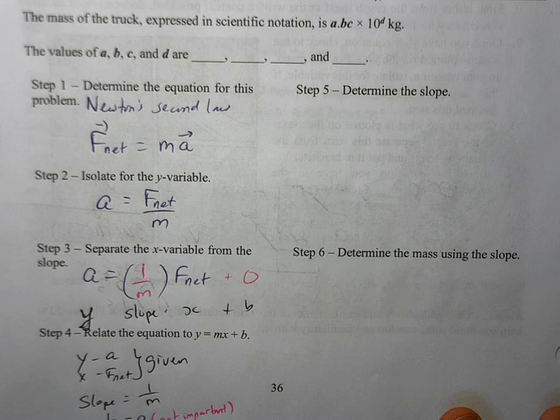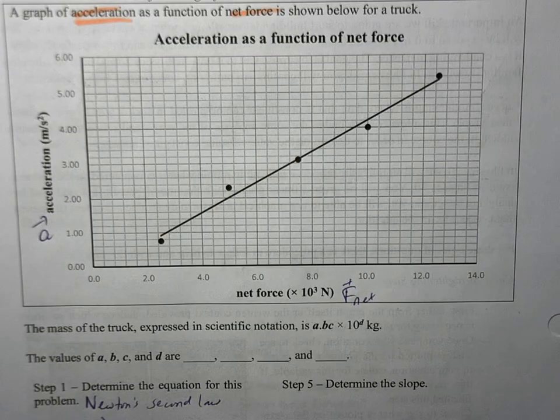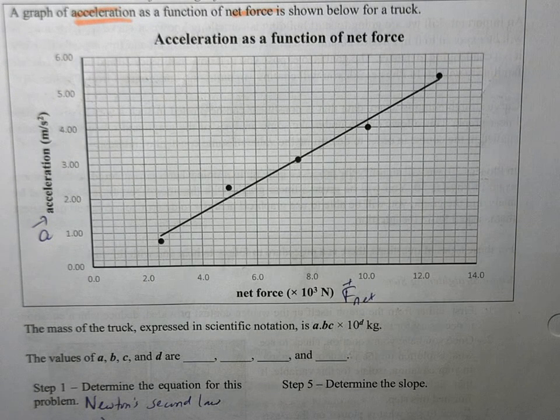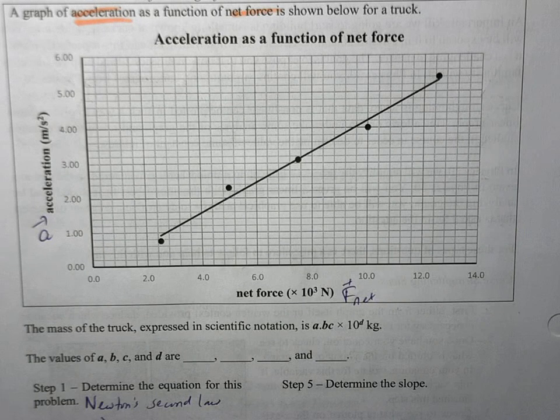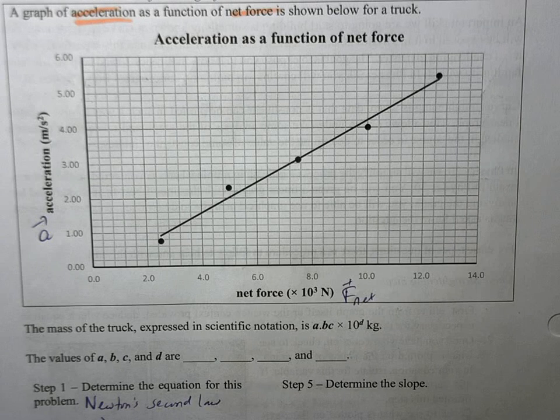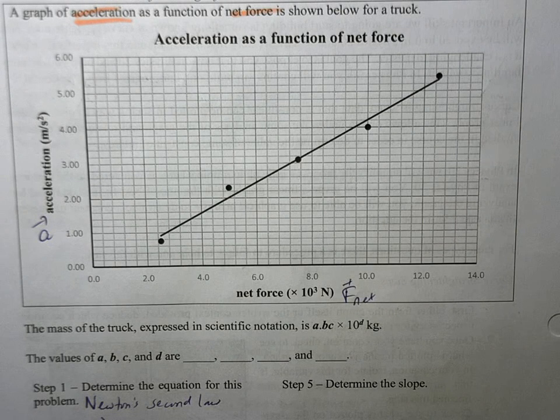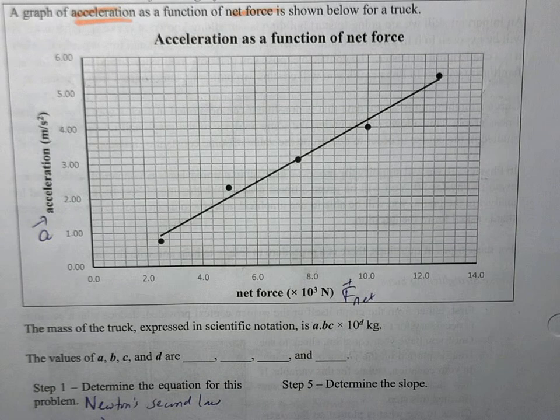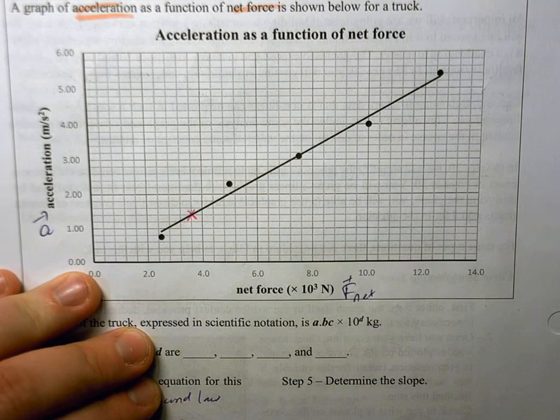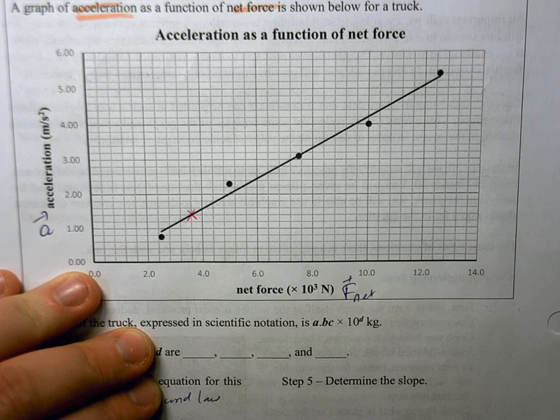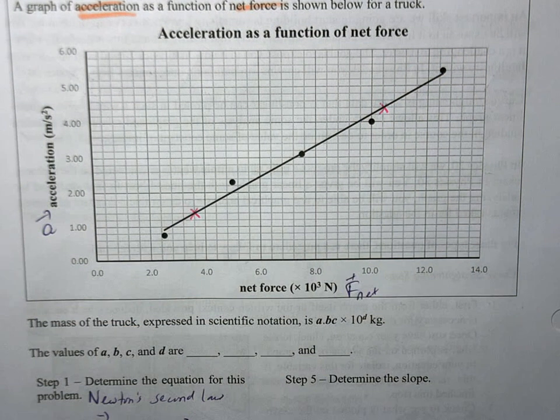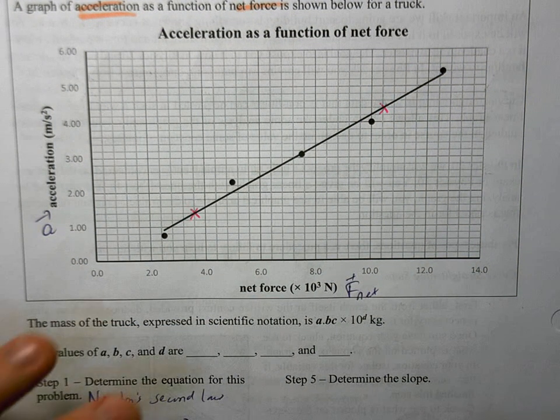Before we get to that though, we actually have to look at our graph and determine the slope. The big thing is always whenever you're doing questions with slope and lines of best fit, you need to take two points off the line of best fit. You don't pick two data points. We pick points on the line of best fit. So I need to identify two points that I can easily read. I'm going to pick this point here, mark it with an x. And I'm also going to pick this point here. It looks pretty easily readable.